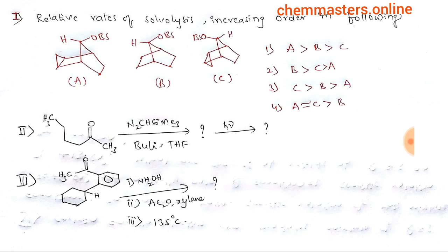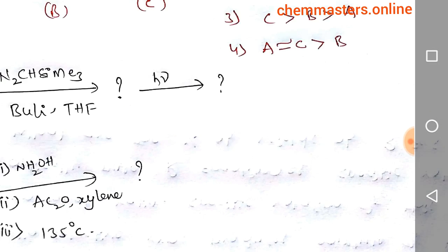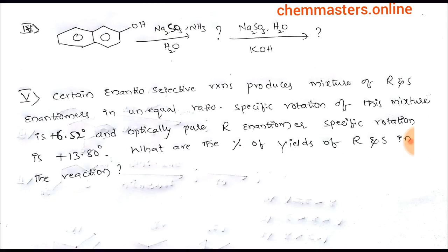Fourth question: what is the product? We have, in the first step, ammonia and water. And in the last step, we have water and the base KOH. Na2SO3 is common in both steps. So what is the product in two steps?